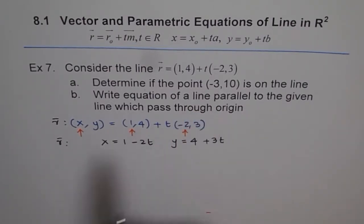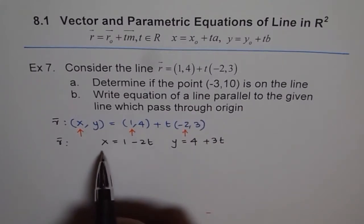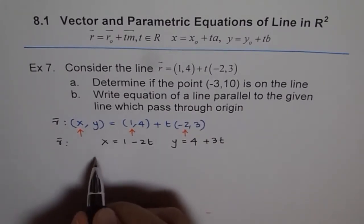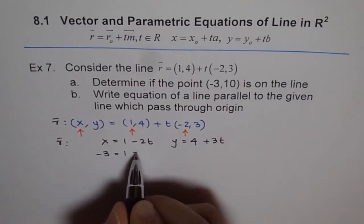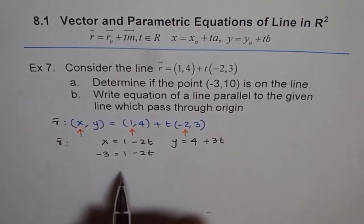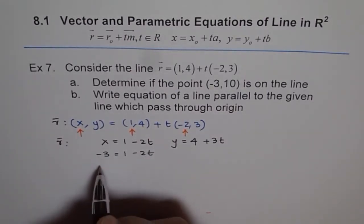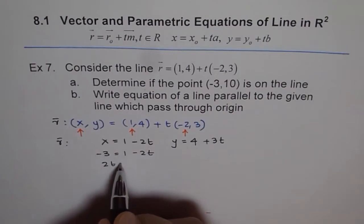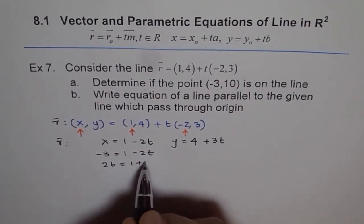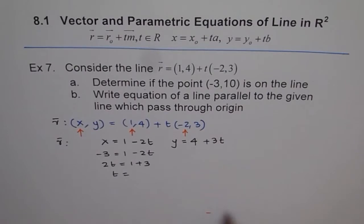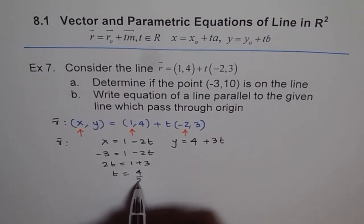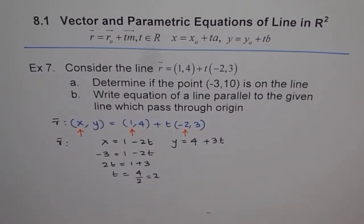We are given x = -3, so let's plug in -3 and find T. When I do so, I get -3 = 1 - 2T. Bringing 2T to one side and 3 to the other, I get 1 + 3 = 4, so T = 4 ÷ 2 = 2. So I got T = 2 for the x coordinate.